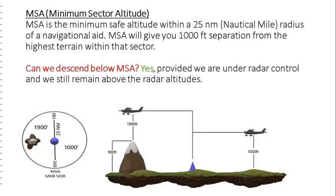Minimum Sector Altitude is the minimum safe altitude within a 25 nautical mile radius of a navigational aid. Minimum Sector Altitude will give you 1,000 feet of separation from the highest terrain within that sector. We normally see the Minimum Sector Altitude on our approach plates for runways.